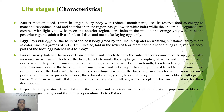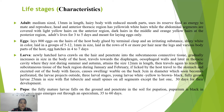Eggs are shiny white and small, hatching in four to seven days. Newly emerged larvae crawl on the hair and penetrate subcutaneous connective tissue, gradually increasing in size as they travel to the diaphragm, esophageal area, and finally the thoracic cavity during summer and autumn, reaching a maximum size of about 12 mm. They then travel to the subcutaneous tissue of the back region during January and February. If licked by the host, they travel to the stomach and are excreted with feces. They cause swellings called warbles on the back, about 3 cm in diameter, from where the larvae project outside.